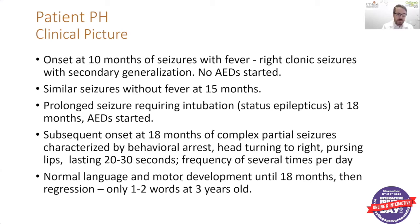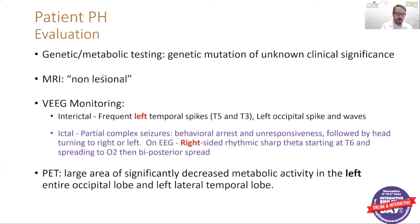At 18 months she also had onset of more complex partial or focal seizures characterized by behavioral arrest, head turning to the right, about 20 to 30 seconds in duration, with several of these occurring per day. She also had normal language and motor development initially until about 18 months of age, and then subsequently had regression with only one to two words noted at three years of age. Her initial evaluation included genetic and metabolic testing, which revealed a genetic mutation of unknown clinical significance.